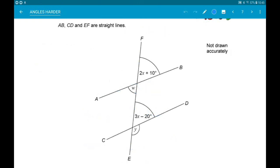Okay, next up, we have angles between parallel lines. So AB, CD and EF are straight lines.